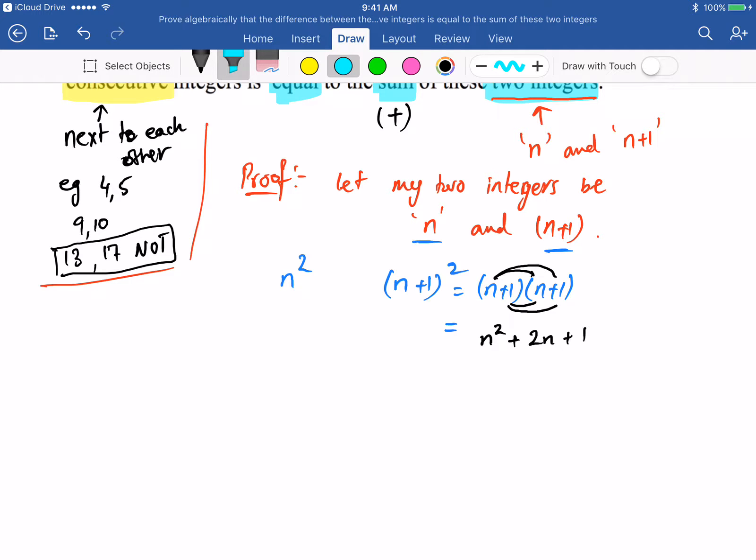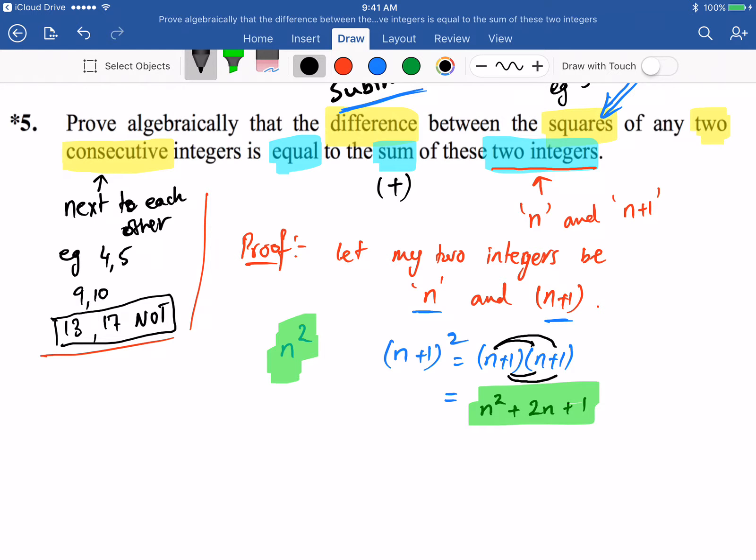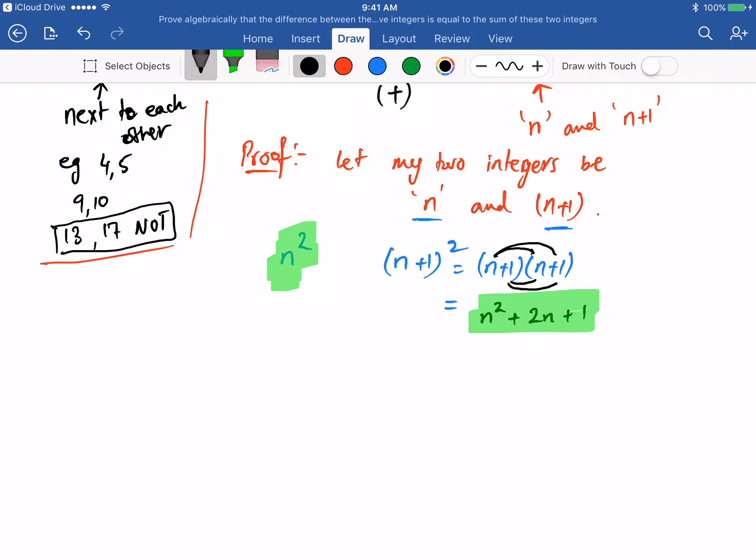Now, because I had two integers and I have squared them, this is my first squared, this is my second squared. And the question said difference, so I'm going to do the difference. So my difference now...